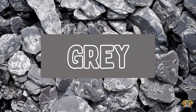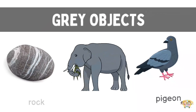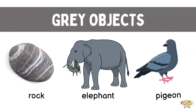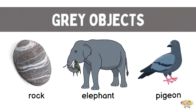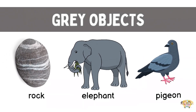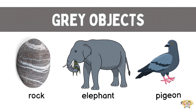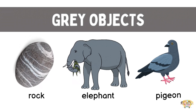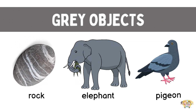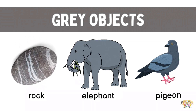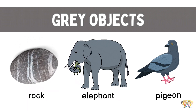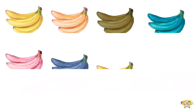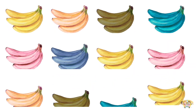And finally, we have the color gray. Objects that are gray are rock, elephant and pigeon. Find the gray bananas.